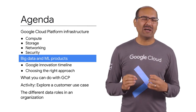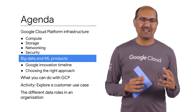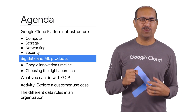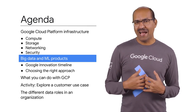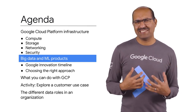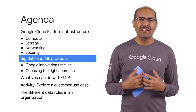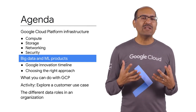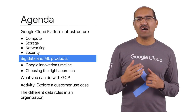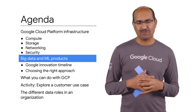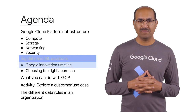So far, we've talked about low-level infrastructure — compute, storage, networking, and security. However, as a data engineer, data scientist, or data analyst, you will typically work with higher-level products. So let's talk about the big data and machine learning products that form Google Cloud Platform.